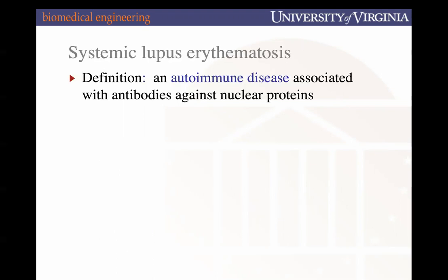Lupus — the longer clinical name is systemic lupus erythematosus, or we can just call it lupus. It's an autoimmune disease associated with antibodies against nuclear proteins. Does anyone want to help us define what an autoimmune disease is?